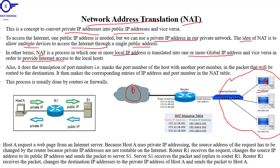NAT also does the translation of port numbers — it masks the port number of the host with another port number in the packet that will be routed to the destination. It then makes the corresponding entries of the IP address and port number in a NAT table. As you can see, this is a NAT mapping table where public IP addresses have been mapped to private IP addresses, such that a private IP address will use a corresponding public IP address to access the internet.